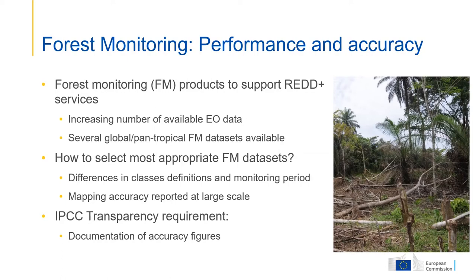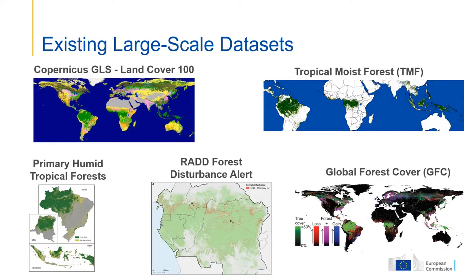There are some differences in the forest and forest change class definitions and also in the monitoring period. Mapping accuracy is provided but reported at large scale, and for IPCC there is a strong requirement to provide documentation of the aggregated figures. You are most probably aware of these different large-scale datasets: the Copernicus land cover, the tropical moist forests, the primary humid tropical forests, the REDD forest disturbance alert, and the global forest cover.